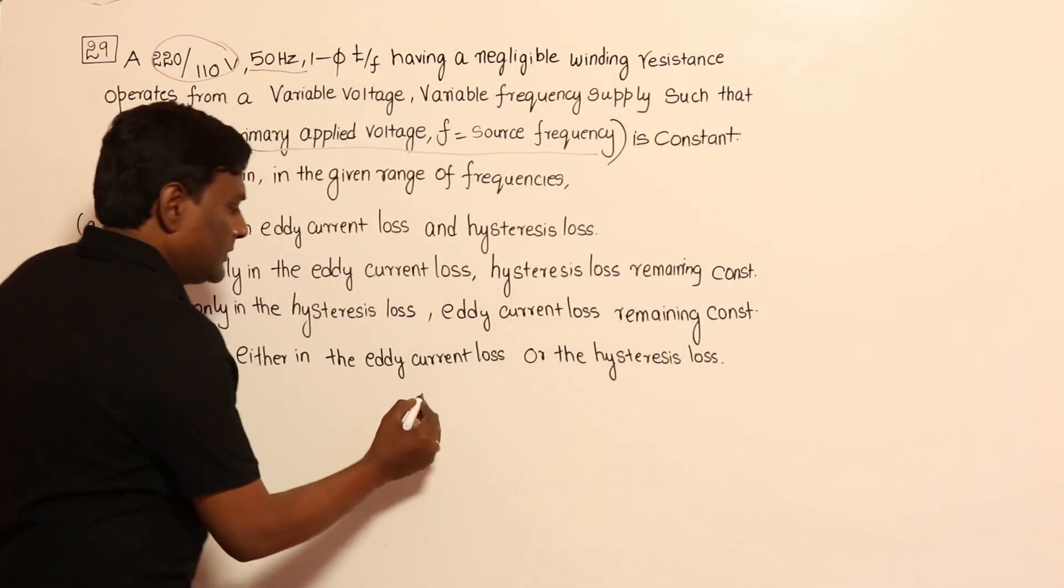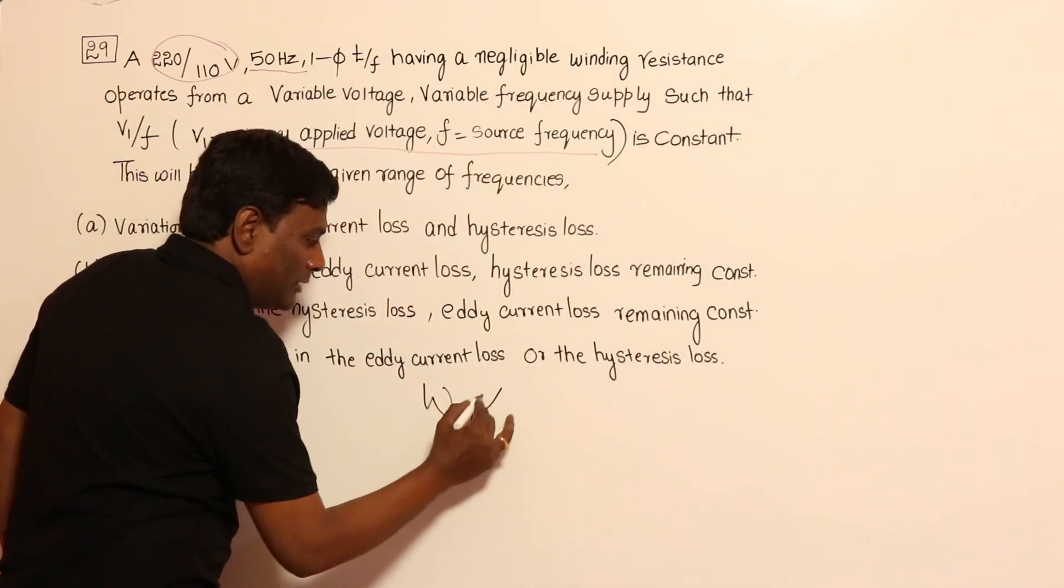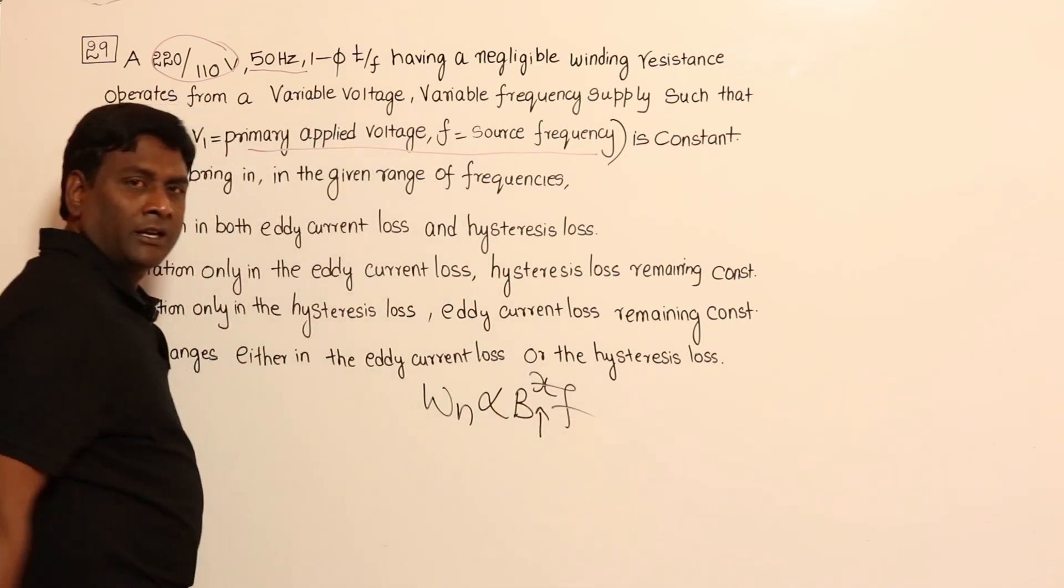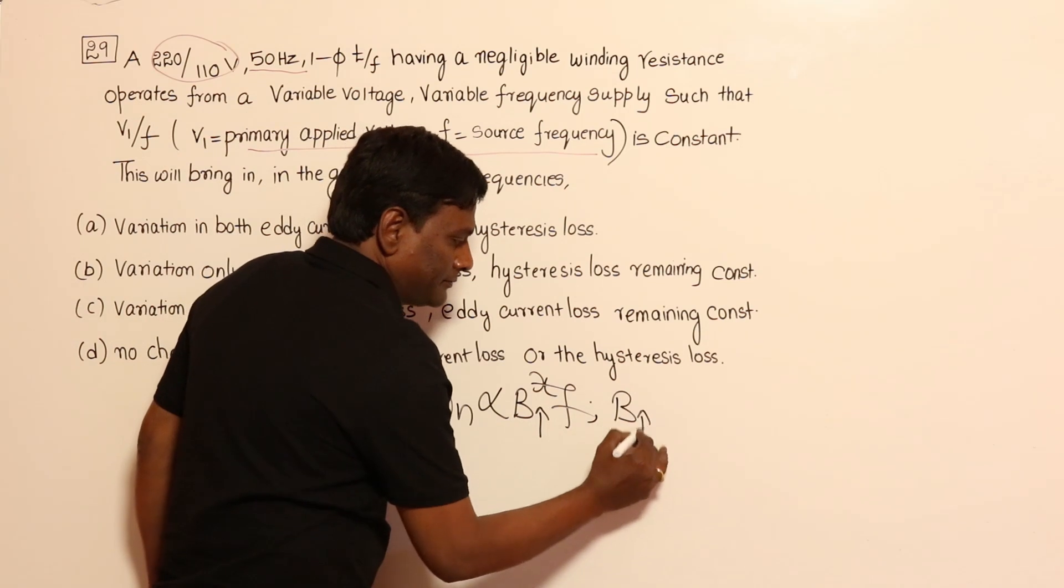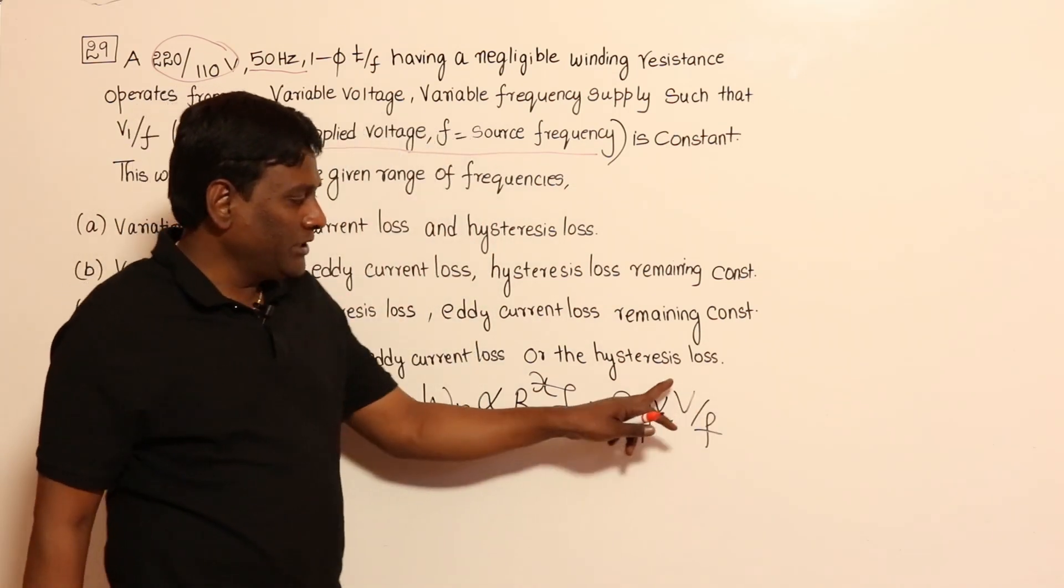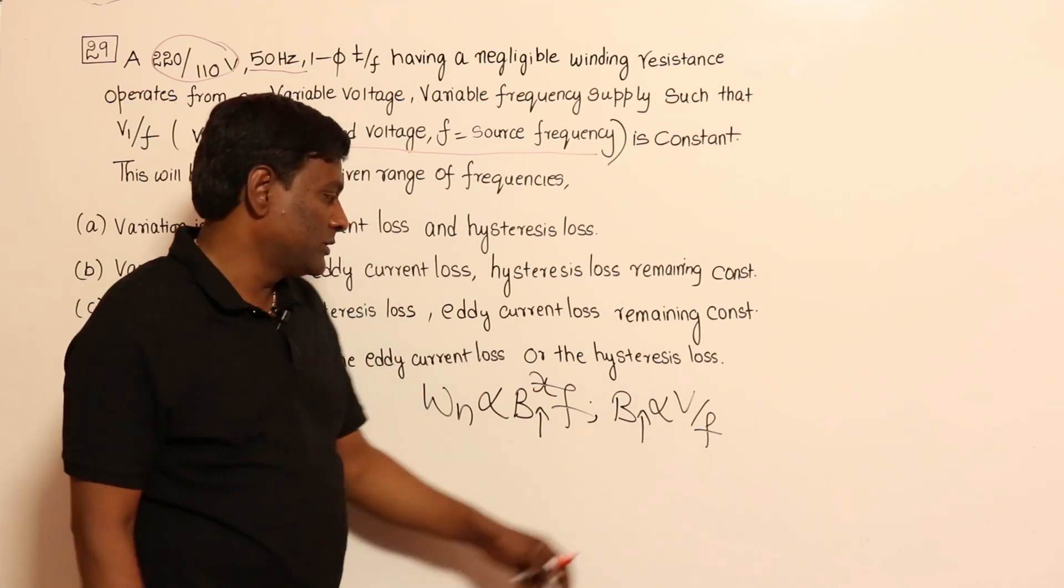Now if you think of hysteresis, hysteresis loss is directly proportional to B_max to the power of X and F, and B_max is directly proportional to V by F. So V by F ratio is maintained constant in this question, so B_max is going to be constant.